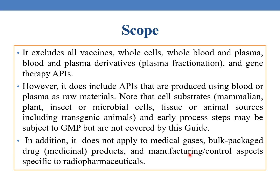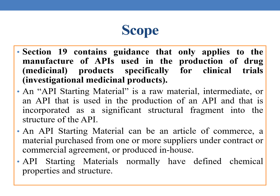In addition, this guide does not apply to medicinal gases, bulk-packed drug products, or manufacturing and control aspects specific to radiopharmaceuticals. Section 19 contains guidance that only applies to the manufacture of APIs used in the production of drug products specifically for clinical trials, that is, investigational medicinal products.